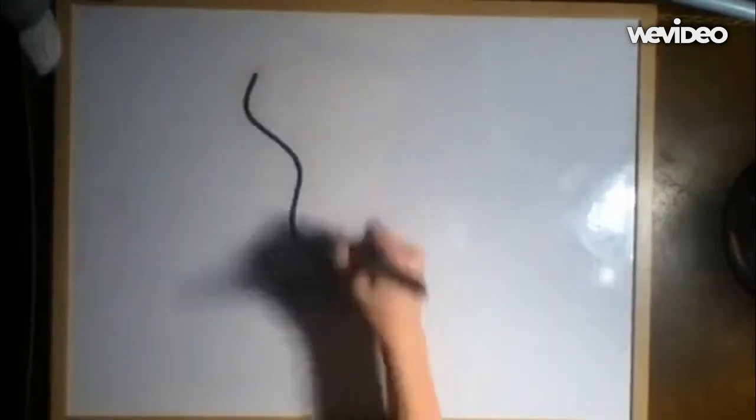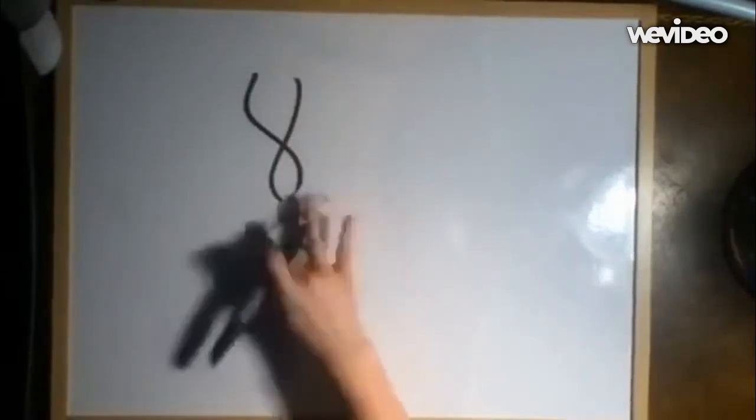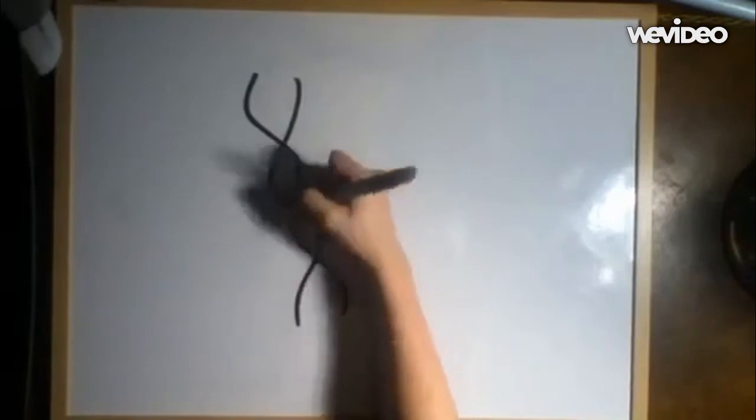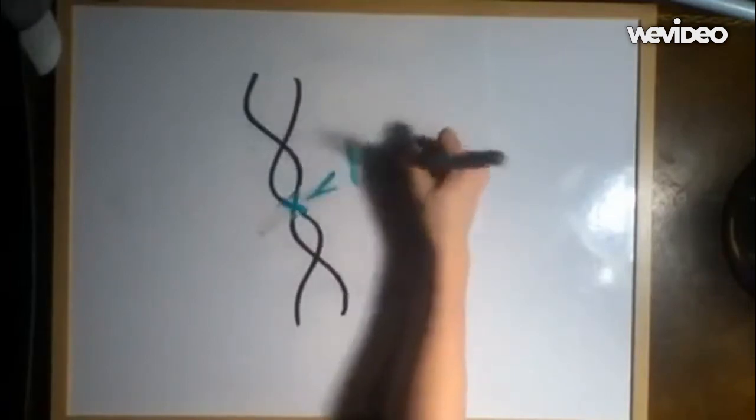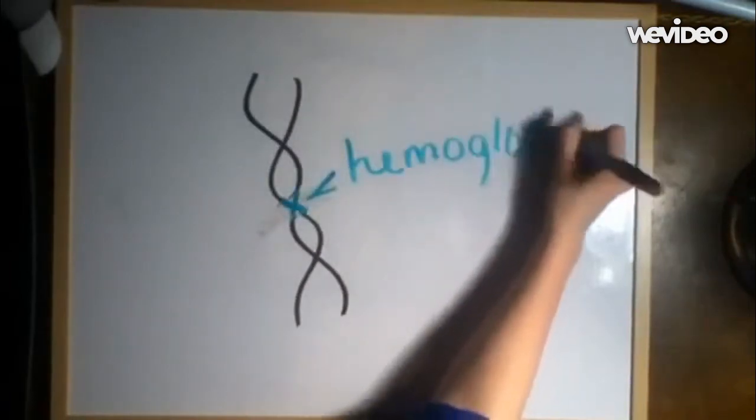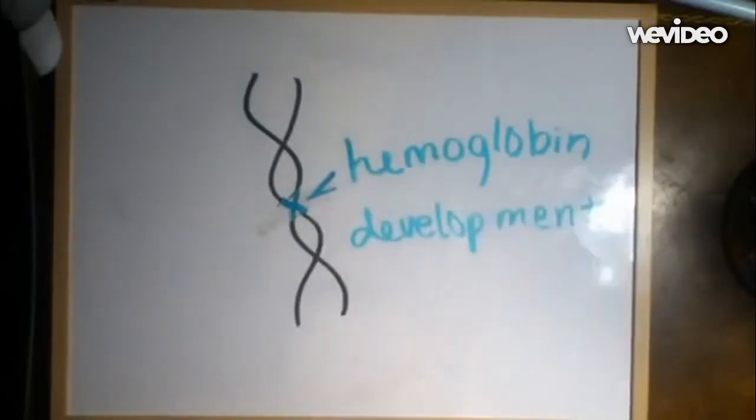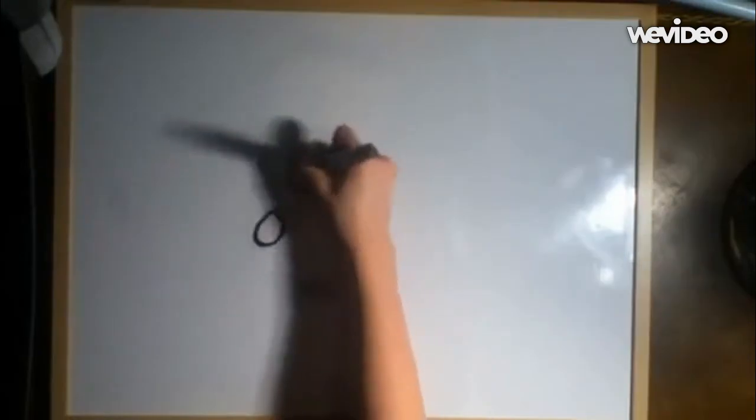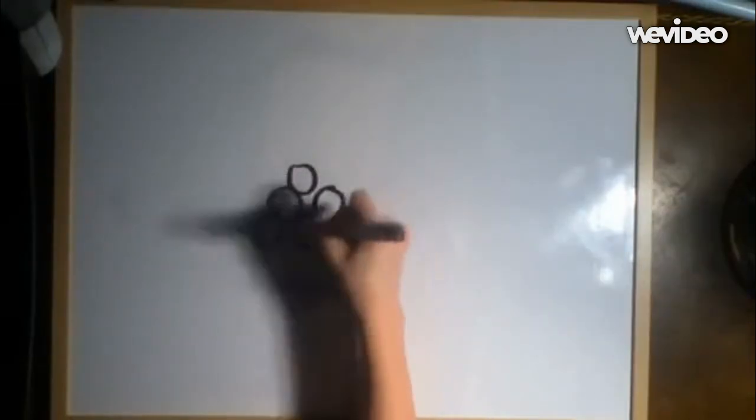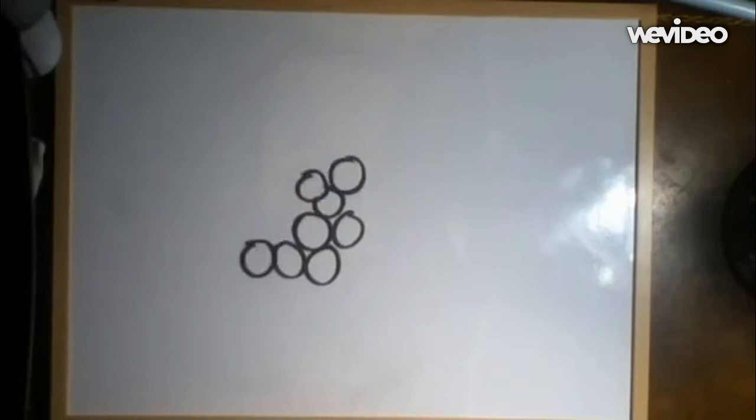So how does something like this happen? A slight alteration in the DNA of an affected individual affects the development of the hemoglobin. Instead of creating a rounder, regular shape as normal hemoglobin does, affected hemoglobin will club together in a long row, which forms the cell sickle shape.